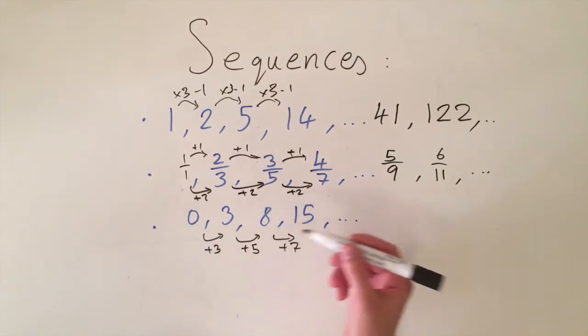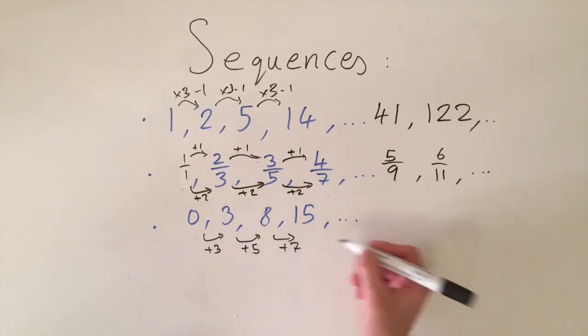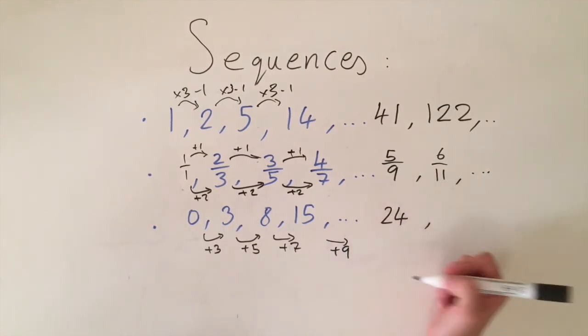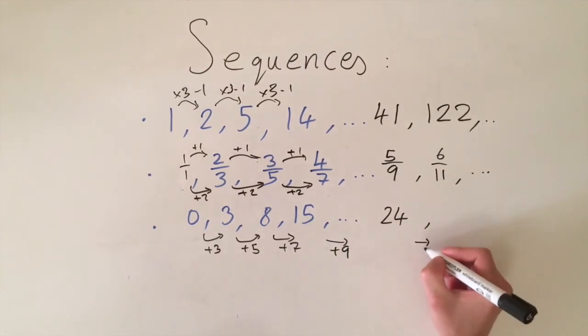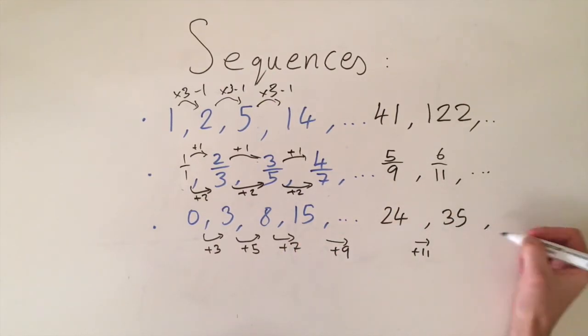And this is kind of the rule that generates all these numbers originally so we can look at what's going to be next, we're going to add 9 and that will give us 24 and for the next one we're going to be adding 11 so this will be 35 and we can work out all the numbers in the sequence using this rule.